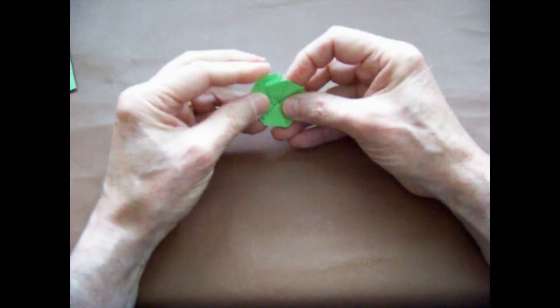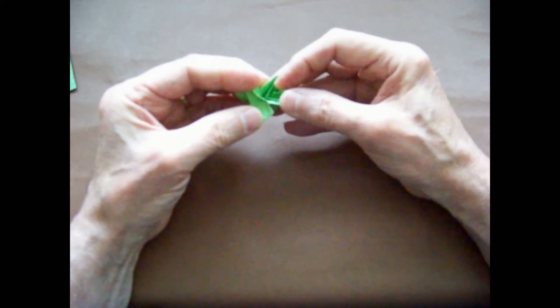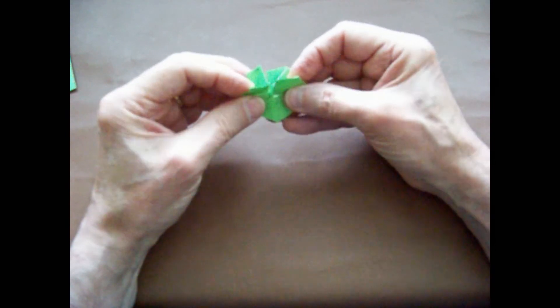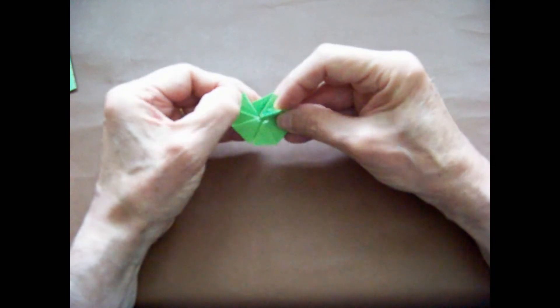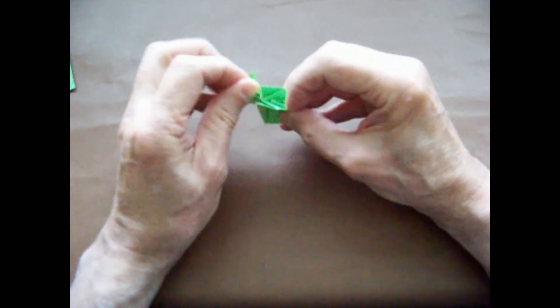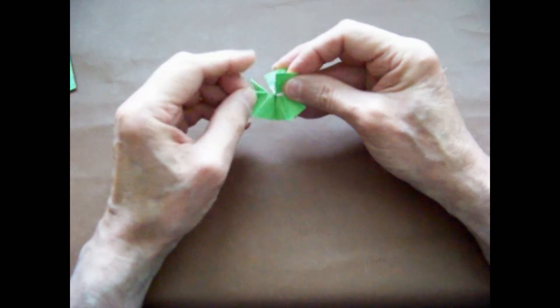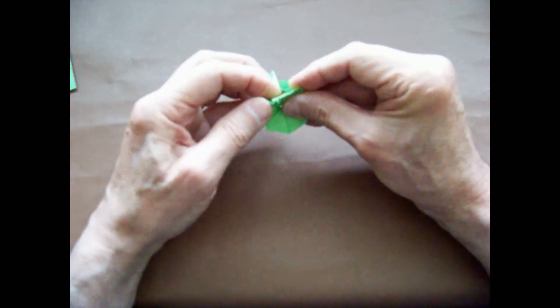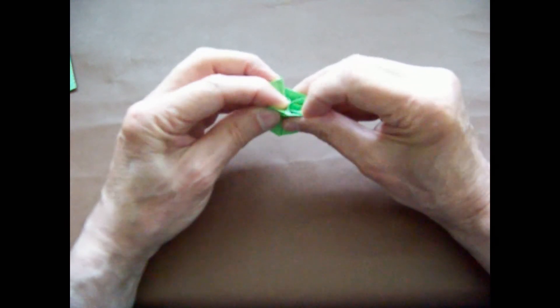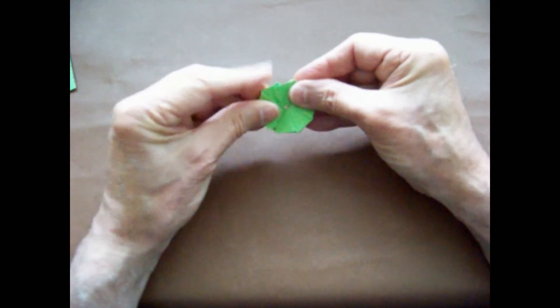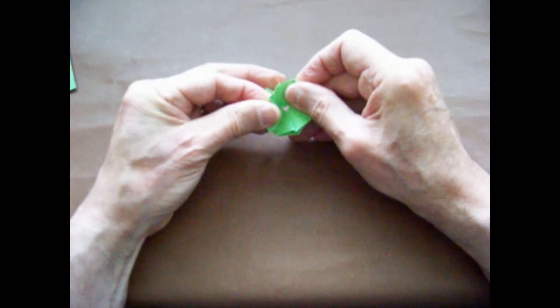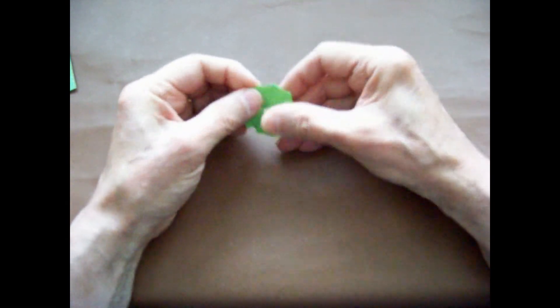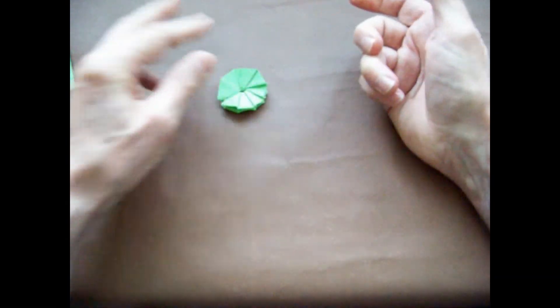Next, we open up the edges. We nest this V shape into the V shape of the last fold so that they come together. And we have our completed pivot.